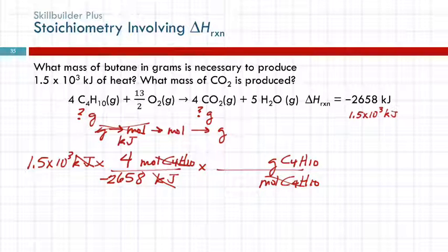What about the negative sign? Well, let's stick it in there and see what happens. And then grams of butane, excuse me, to moles of butane. I don't feel like writing this down. 4 times 12.01 plus 10 times 1.008, I'm getting 58.12 grams is 1 mole. So I've got 1.5 EE3 times 4 divided by negative 2658 times 58.12 equals. I'm coming up with minus 131.196 grams.